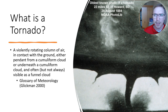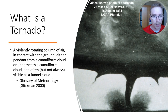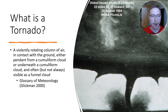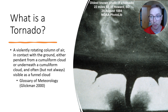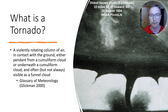So what is a tornado? Basically, through the glossary of meteorology, it is a violently rotating column of air in contact with the ground, either pendant from a cumuliform cloud or underneath a cumuliform cloud, and often but not always visible as a funnel cloud. That's from Glickman, 2000, the Glossary of Meteorology.